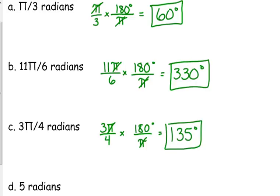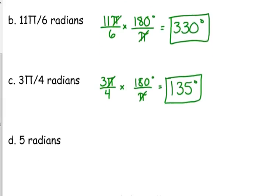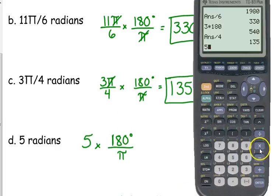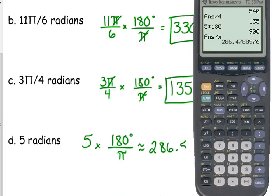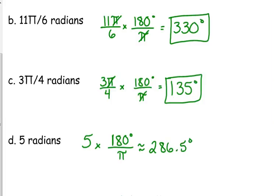Now this last one. The 5 radians. There's no π. Well, that just means that the π isn't going to cancel out. So this is the one case where we are going to multiply out the π. So 5 times 180 divided by π. 5 radians is approximately 286.5 degrees. It's approximately 286.5 degrees. So 5 radians, very different from 5 degrees. You've got to put that symbol on there if it's degrees.